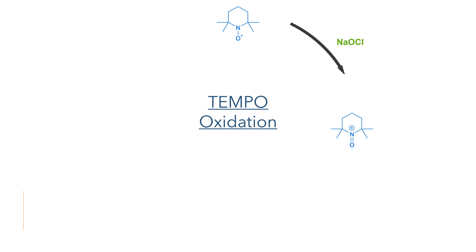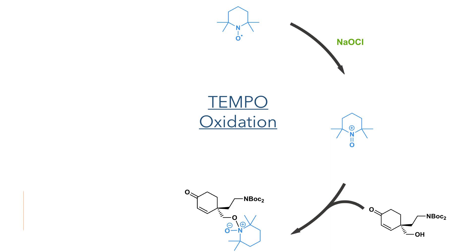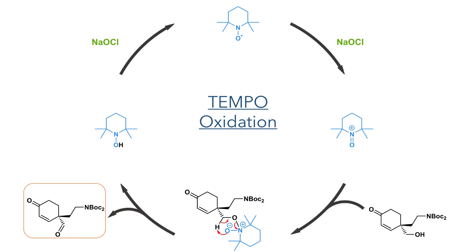In the next step, the primary alcohol was oxidised back to an aldehyde using TEMPO. Sodium hypochlorite first oxidises TEMPO to form an oxonium, and this is then attacked by the primary hydroxyl group. The resulting N-oxide then deprotonates the molecule, forming the aldehyde and producing hydroxylamine. This hydroxylamine is then reoxidised back to TEMPO, once again by sodium hypochlorite.